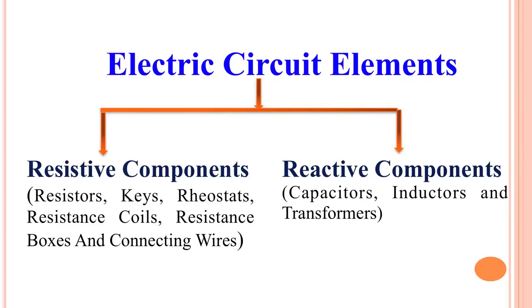In any electrical circuit, you can have various types of components. Some are called resistive components, which are passive components. They offer the same resistance in any electrical circuit irrespective of the experimental conditions. Examples include resistors, keys, rheostats, resistance coils, resistance boxes, and connecting wires.